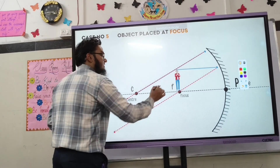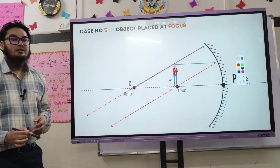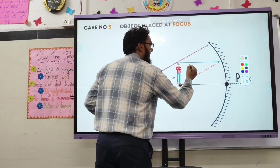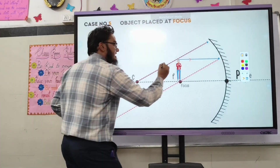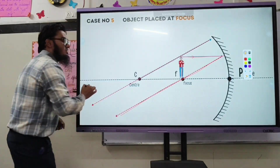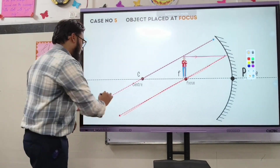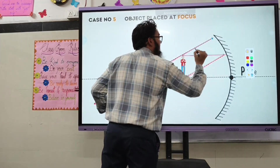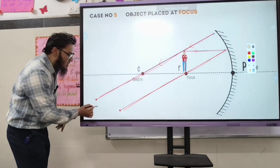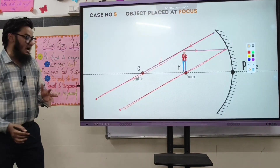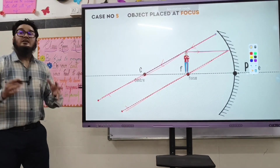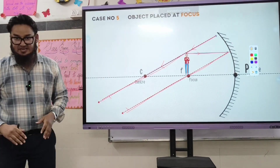Case number five: if the object is placed at the focal point, the image will be formed at infinity. Using rule number one and rule number three, you can notice both reflected rays are parallel — they are not going to meet — clearly indicating that the image is forming at infinity.